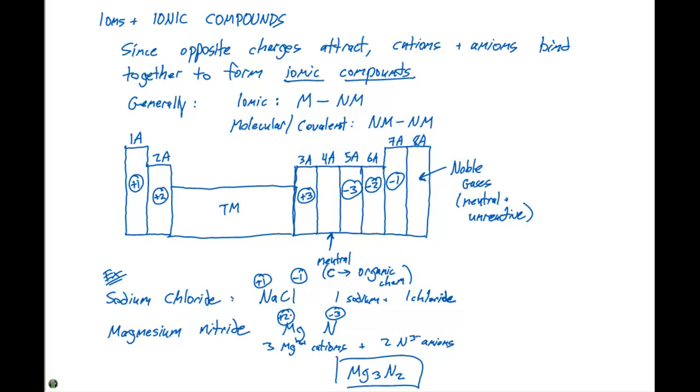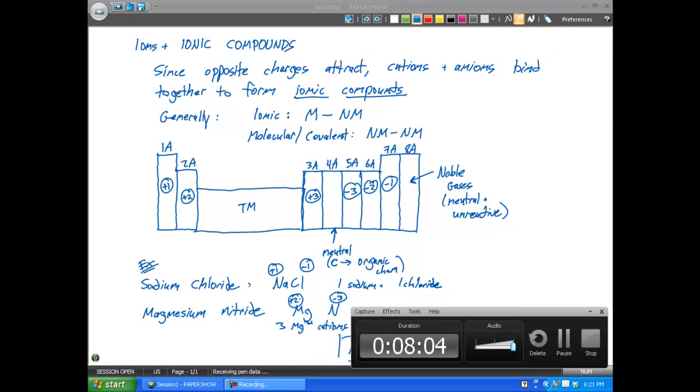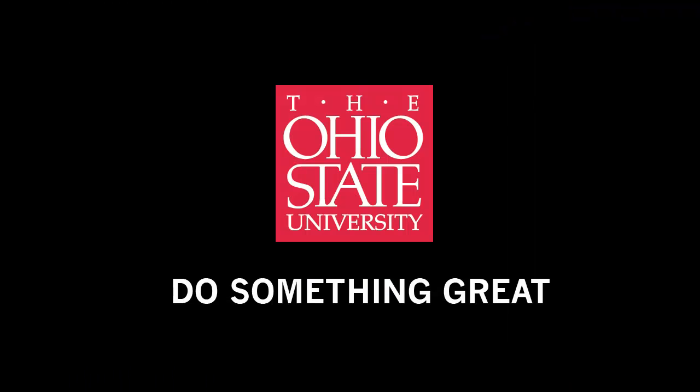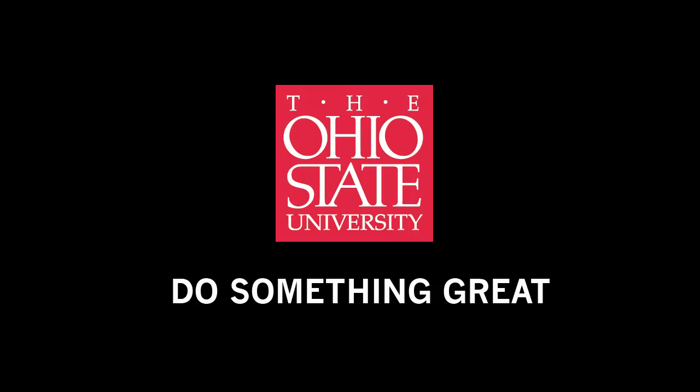And the next section that we're going to look at is titled nomenclature, where we can come up with a method and a way to name each of these compounds, and to figure out what we have present in these ionic compounds as well as the molecular compounds.